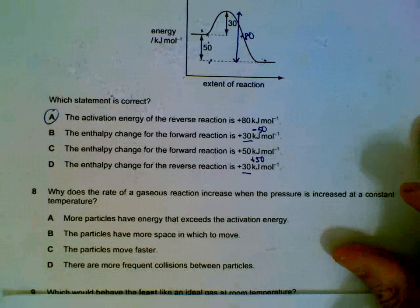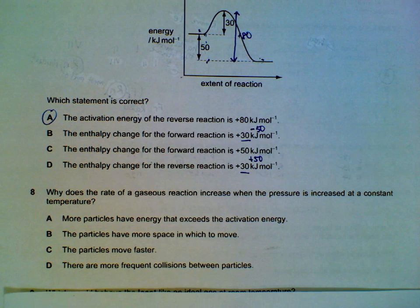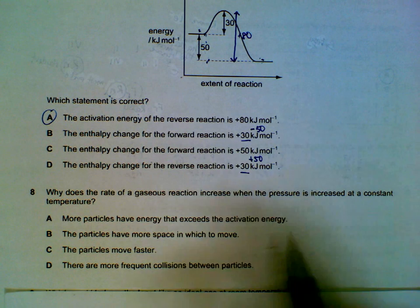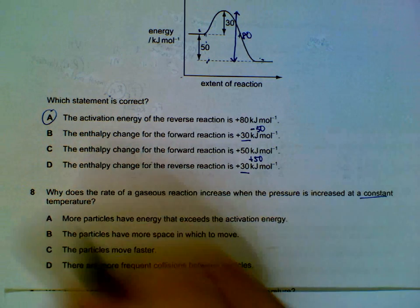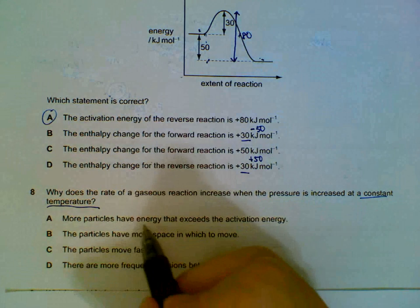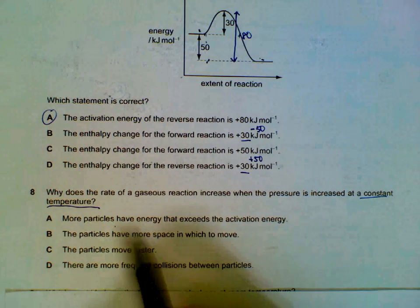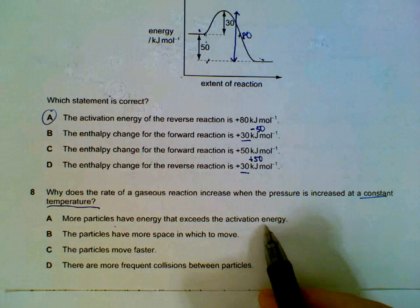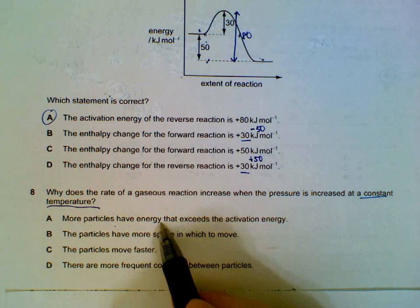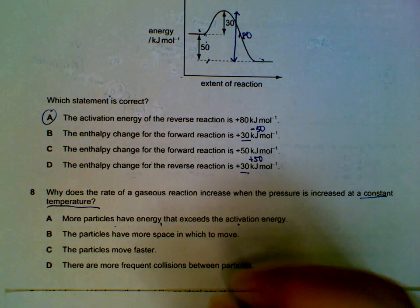Question 8: why does the rate of a gaseous reaction increase when pressure is increased at constant temperature? Key thing: constant temperature. If temperature is constant, particles have the same energy, so the claim that more particles exceed the activation energy is not true — that only happens when we increase temperature or decrease the activation energy, neither of which is happening here.